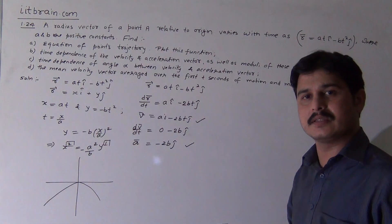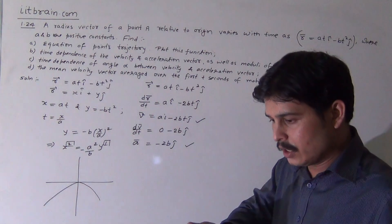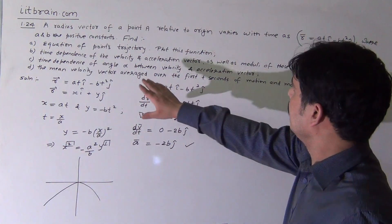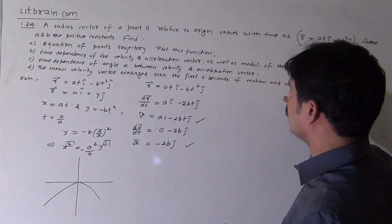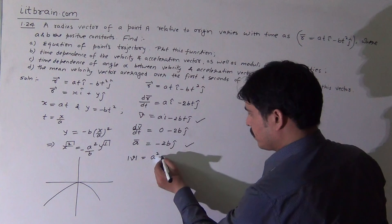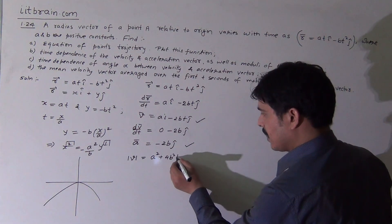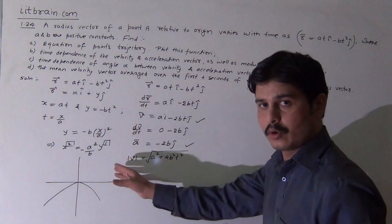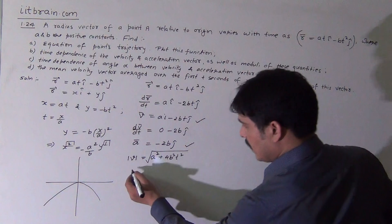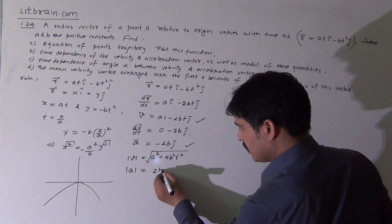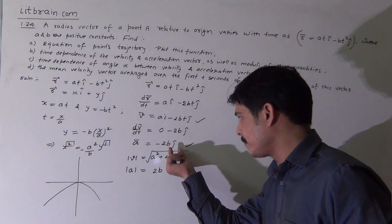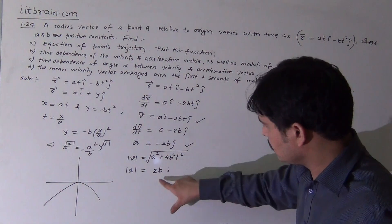Since acceleration is free from time, this confirms uniformly accelerated motion. The modulus of velocity is |v| = √(a² + 4b²t²). The modulus of acceleration is |a| = 2b, since -ĵ represents the direction of acceleration and 2b is its magnitude.